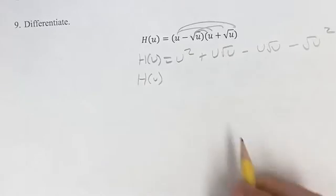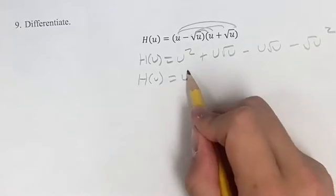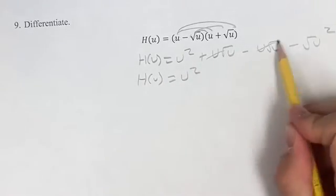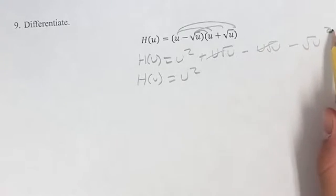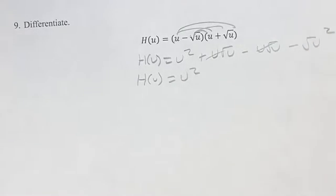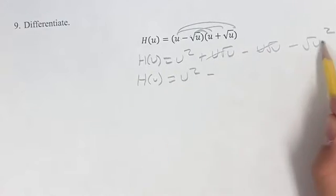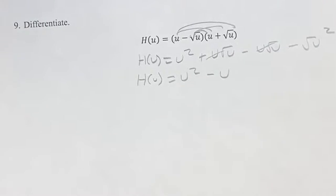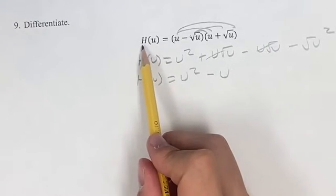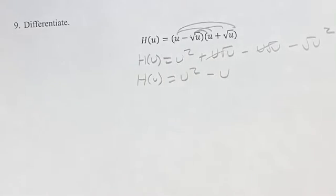This might not look too much easier right now until we realize that we have u squared, and then these terms cancel, and then the square root of u squared—while the square root of anything squared is just the thing itself—so we have minus the thing itself which is u. And this is a lot easier to find the derivative of than using the product rule.